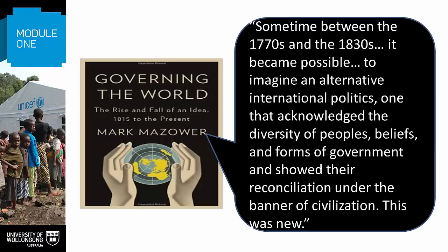To quote Mazzaur again, sometime between the 1770s and 1830s, it became possible, against the backdrop of the French Revolution and the Concert of Europe, to imagine an alternative international politics, one that acknowledged the diversity of peoples, beliefs and forms of government, and showed their reconciliation under the banner of civilisation. This was new. Moving further into the 19th century, we see a notable growth in the number of international governmental organisations, and of states too. Although the Concert of Europe didn't survive, it was replaced in the 20th century with a more inclusive organisation, the League of Nations.